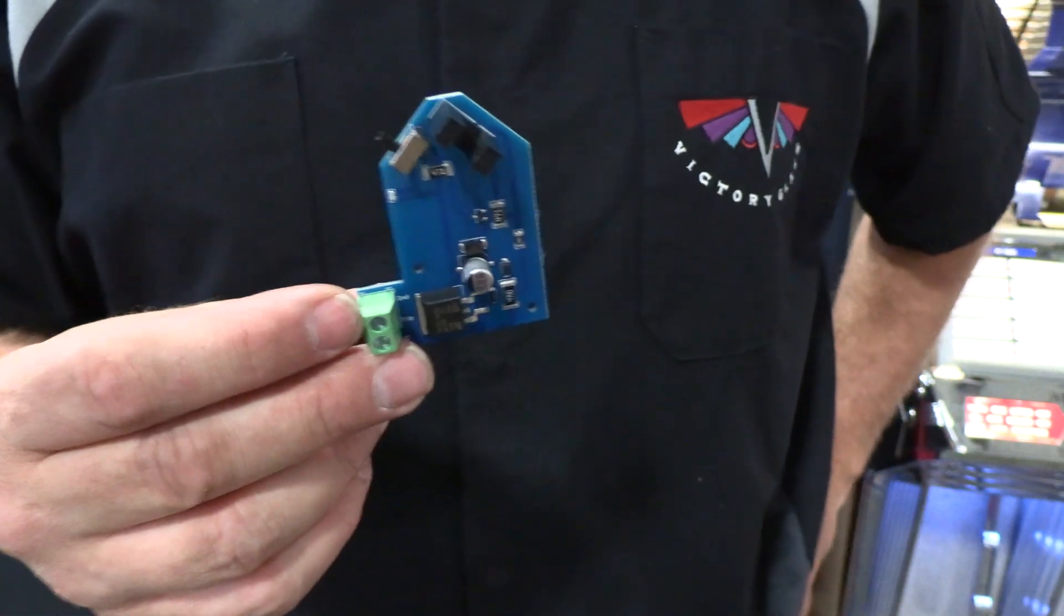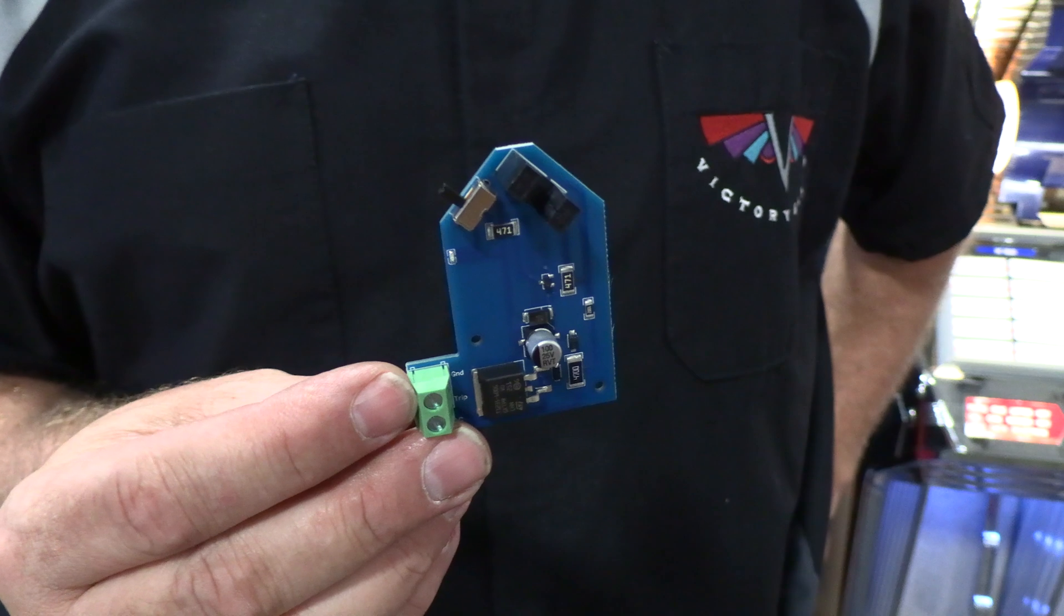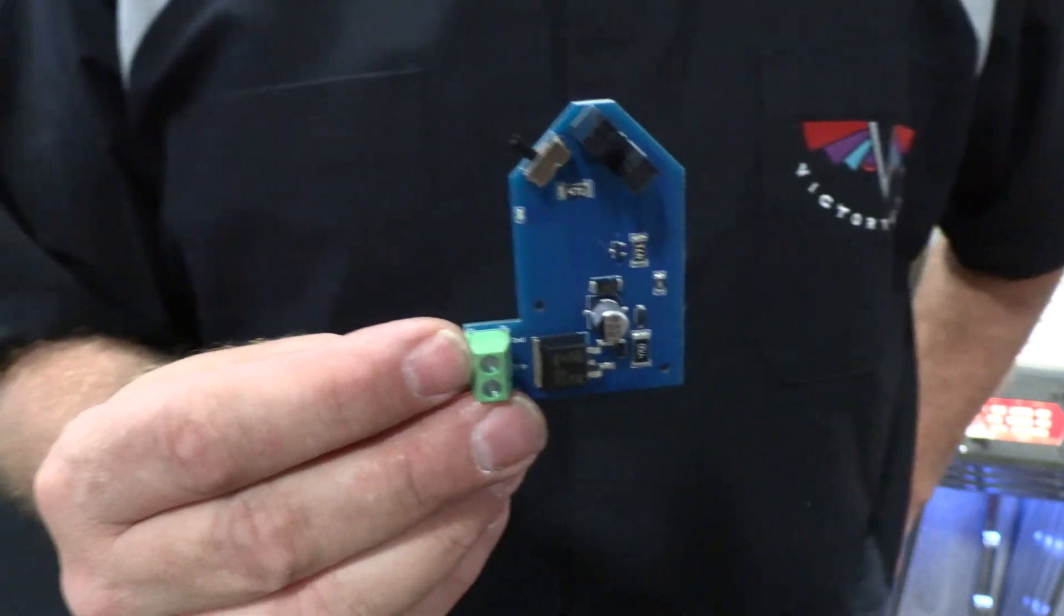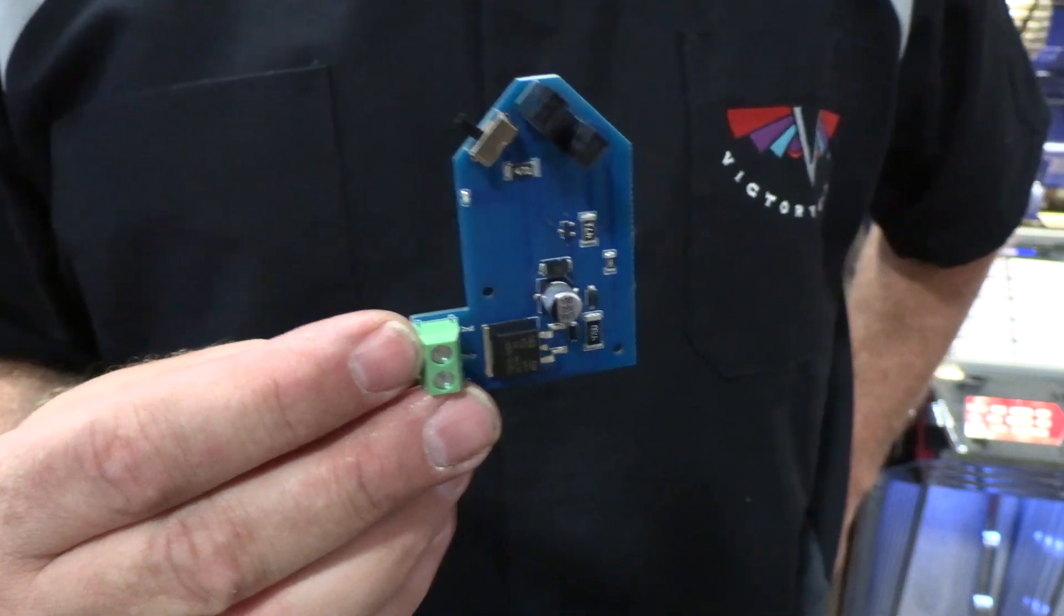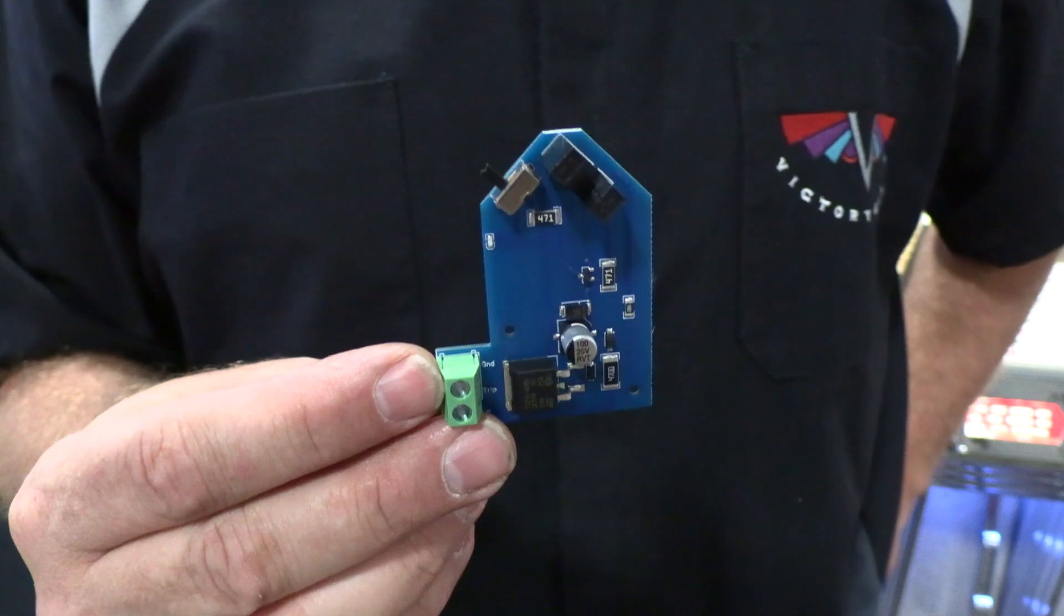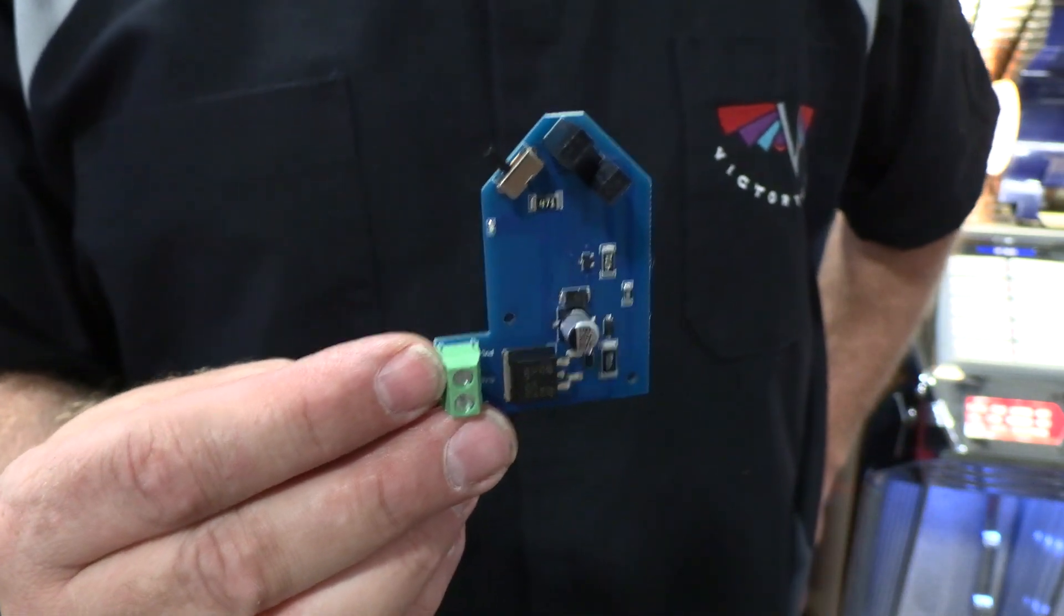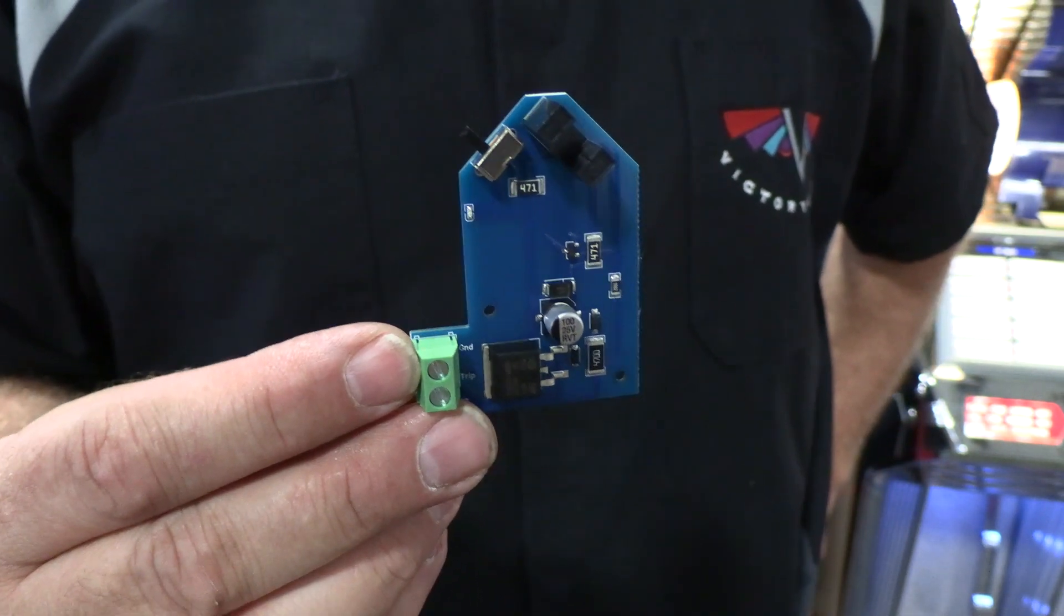The new trip switch replaces the original mechanical micro switch and bias spring, which can be a bit finicky to adjust and keep consistent. Furthermore, with newer lighter tracking needles, having enough tracking force to overcome the mechanical trip switch has gotten even more difficult.